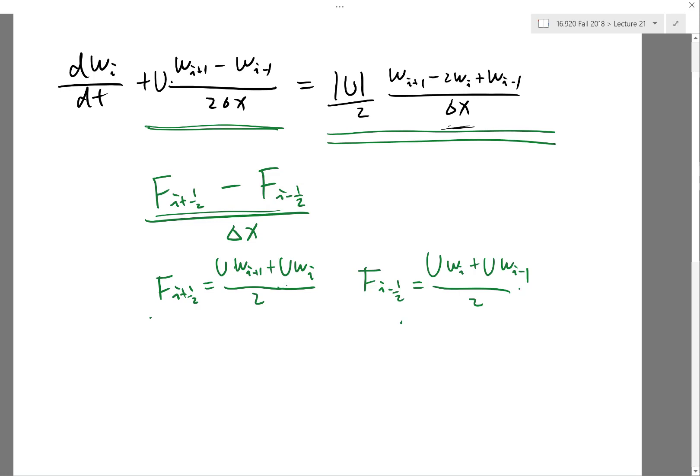So now the question is how do I incorporate the numerical dissipation into the flux? And again, the objective is to make this conservative. We have to say that fᵢ₊₁/₂ has to be the same seen from the i-th grid point and i-1 grid point. This is required for numerical conservation.